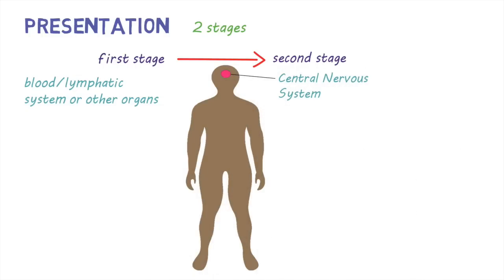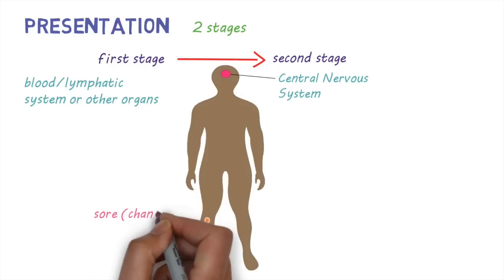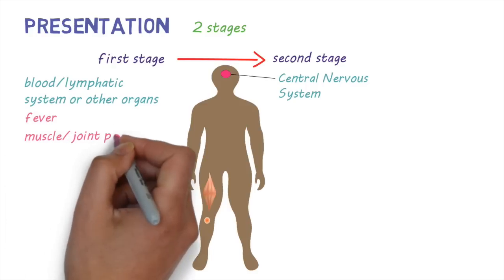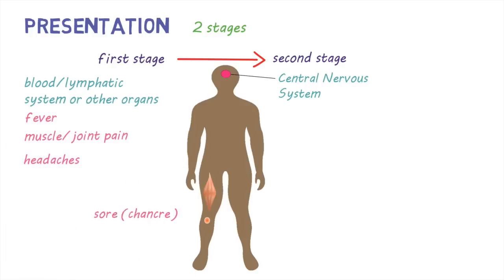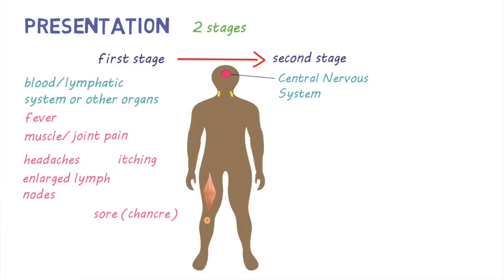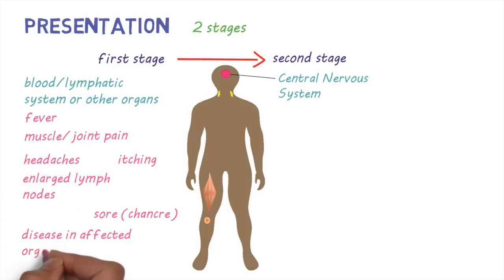Initially there can be a painful sore, also called a canker, at the site of the tsetse fly bite. Symptoms of the first stage include fever, muscle and joint pain, headaches, itching, and enlarged lymph nodes. It can lead to disease in the affected organs such as inflammation of the heart muscle, enlargement of the spleen and liver, and eye disease.